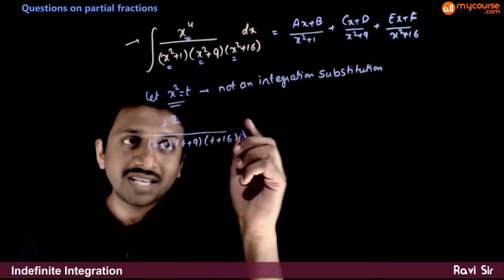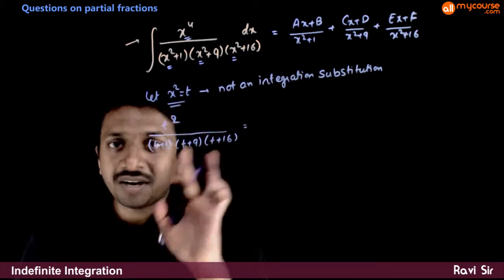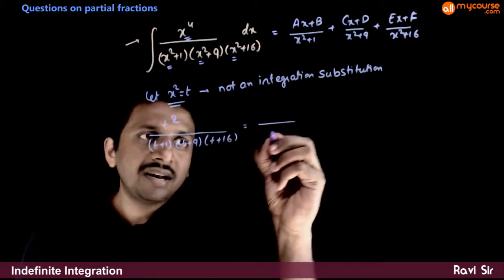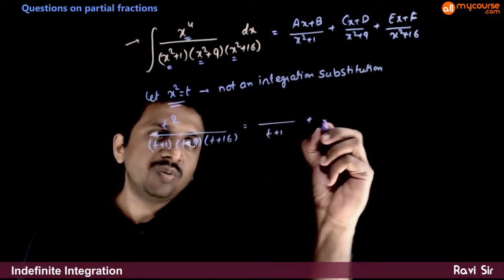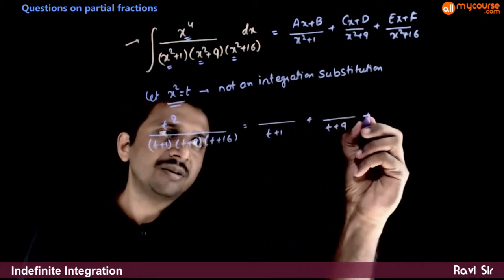This expression becomes t square by t plus 1 times t plus 9 times t plus 16. Now the denominator has linear factors, so I can split this into partial fractions directly.